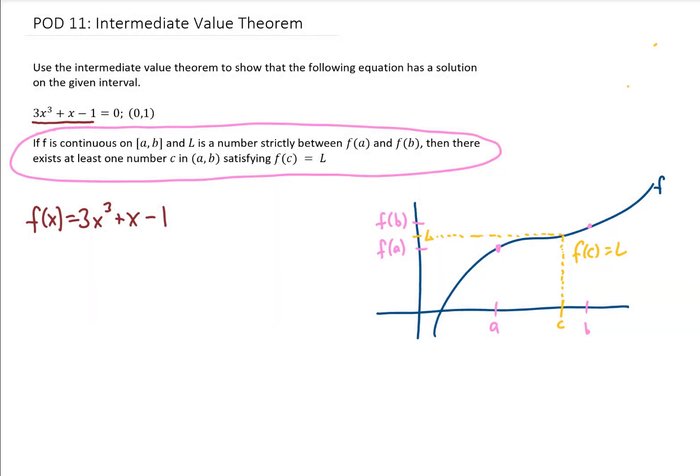One thing you might notice is that f(0), the y value of this function when x equals 0, is going to be 0 + 0 - 1, or -1. You might also notice that f(1), or the y value when x equals 1, turns out to be 3.